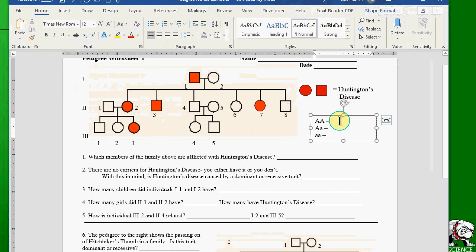Well, in the case of capital A, capital A, no disease. In the case of capital A, lowercase a, well again, there's no disease because they have the dominant trait. And what about in the case of lowercase a, lowercase a? Well, this time, they would have Huntington's.